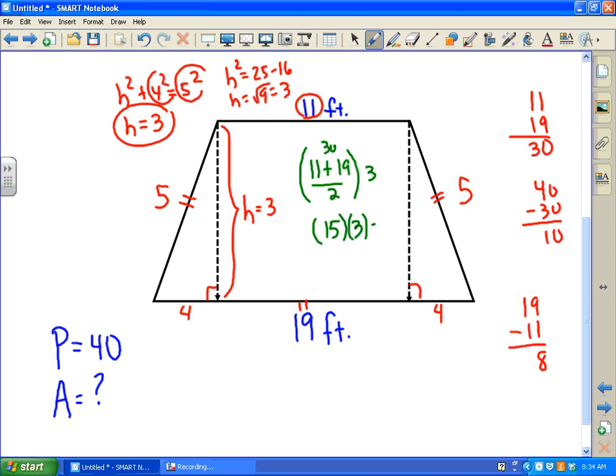15 times 3 should be the area. 15 times 3 is 45. Now our units were all in feet, so if we're talking about area, this should be 45 square feet.